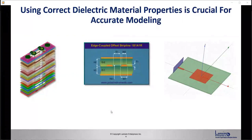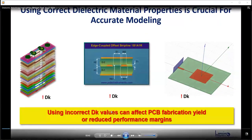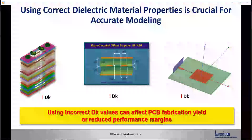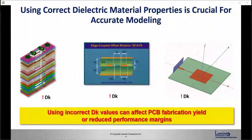Using correct dielectric material properties is crucial for accurate modeling. And one of the most important parameters is DK. So using incorrect DK values can affect the PCB fabrication yield or reduce the performance margins of your design.